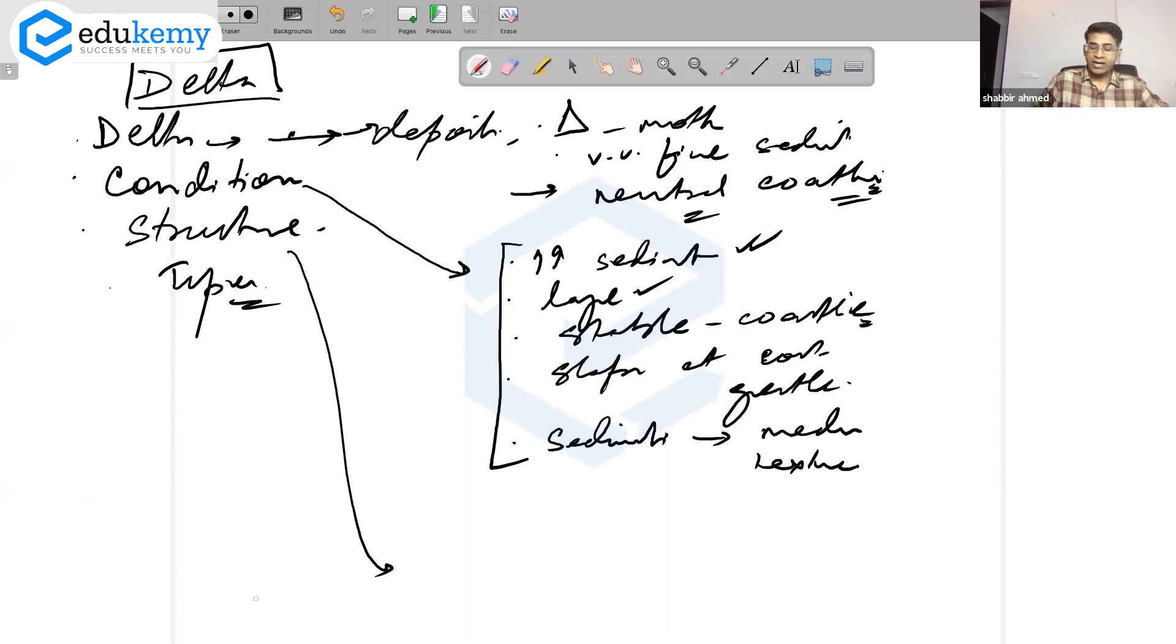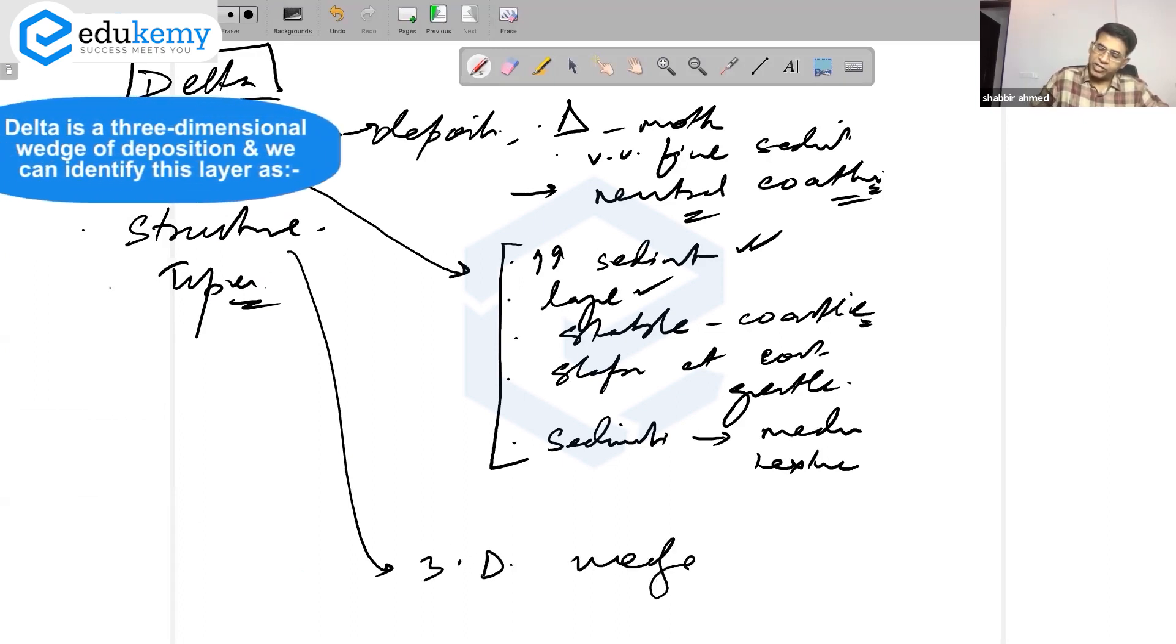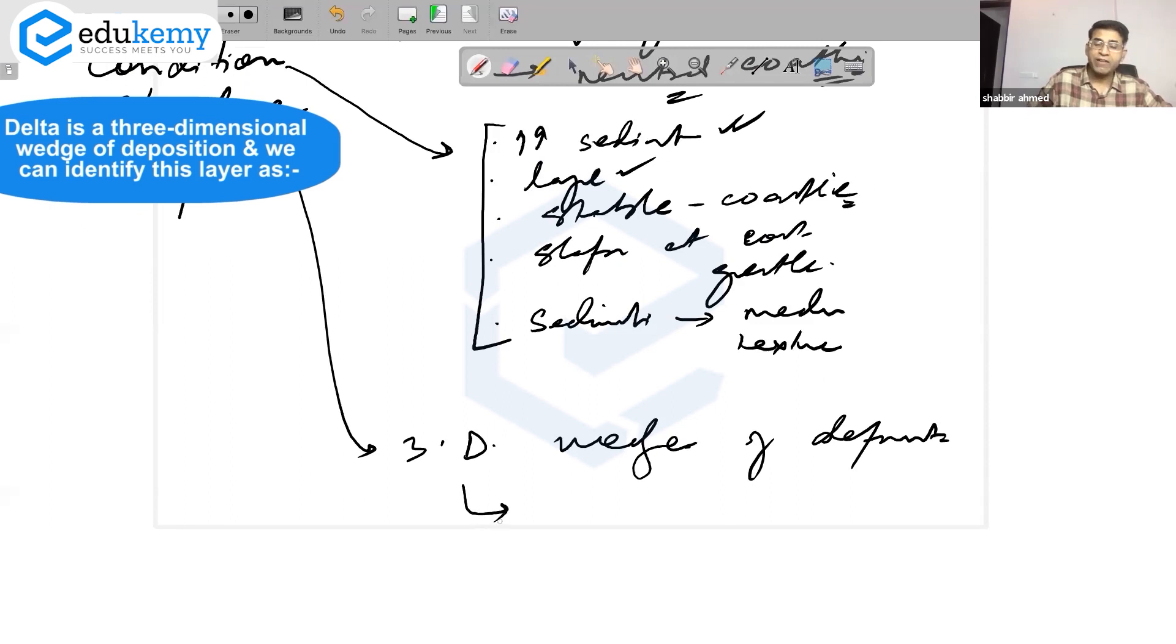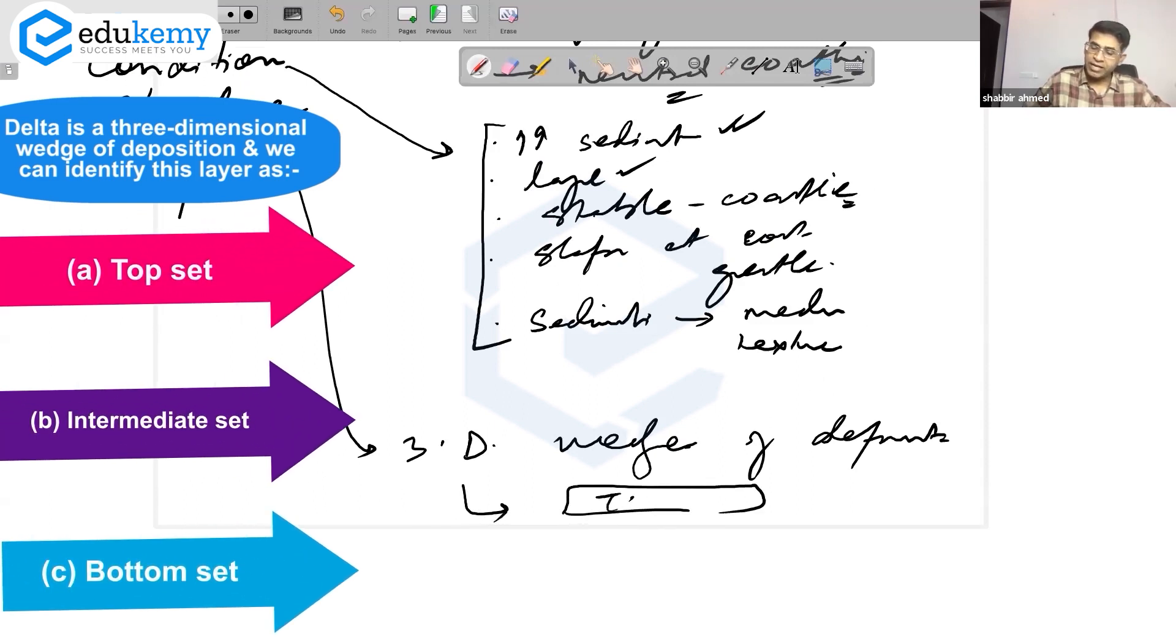Structure of the delta: delta is a three-dimensional wedge, like a triangular wedge of deposition. We can identify three layers.